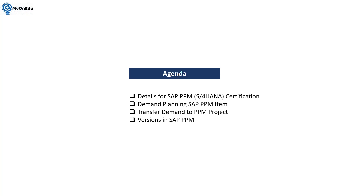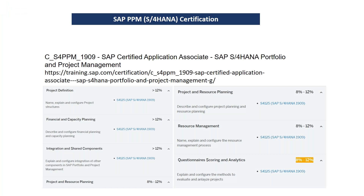Let's first discuss the details of SAP PPM certification. Our main focus is the certification C_S4PPM_1909 — SAP Certified Application Associate for SAP S4 HANA Portfolio and Project Management. All the details are available on the link shown here, which I will also share. The first key area is project definition, which carries more than 12% of the exam. It covers portfolio project management — also called PPM project — including all functionality of project definition and project structure.